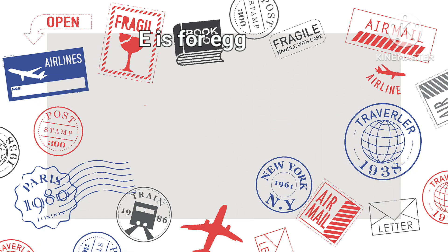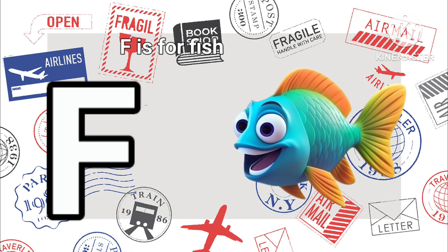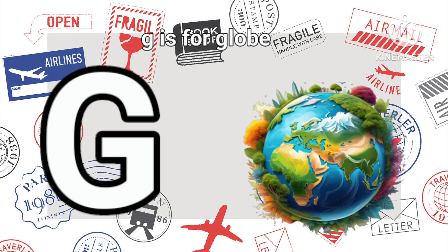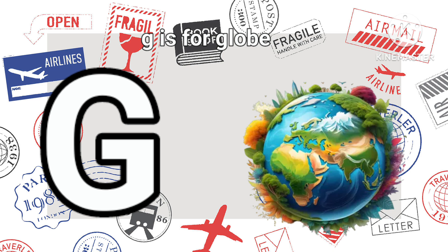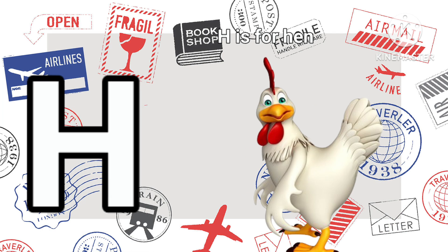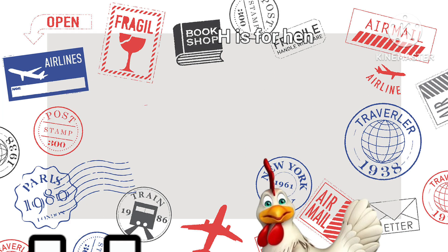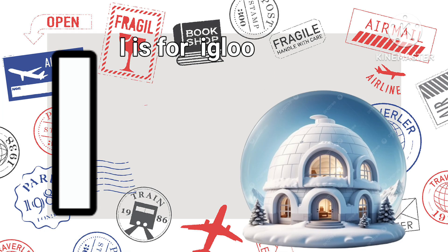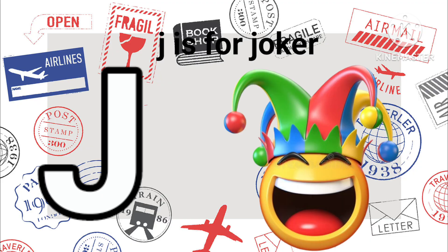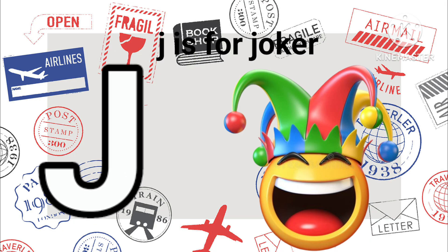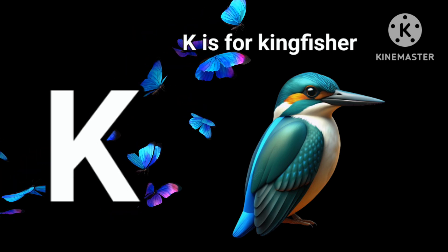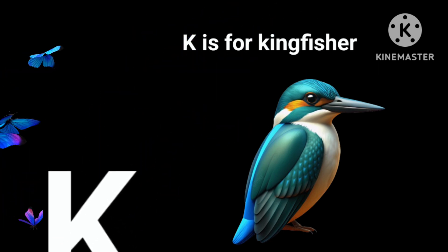F is for Fish. G is for Globe. H is for Hen. I is for Igloo. J is for Joker. K is for Kingfisher.